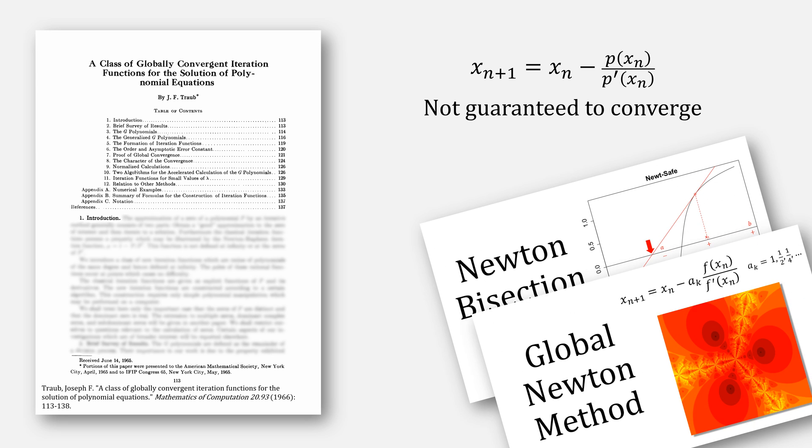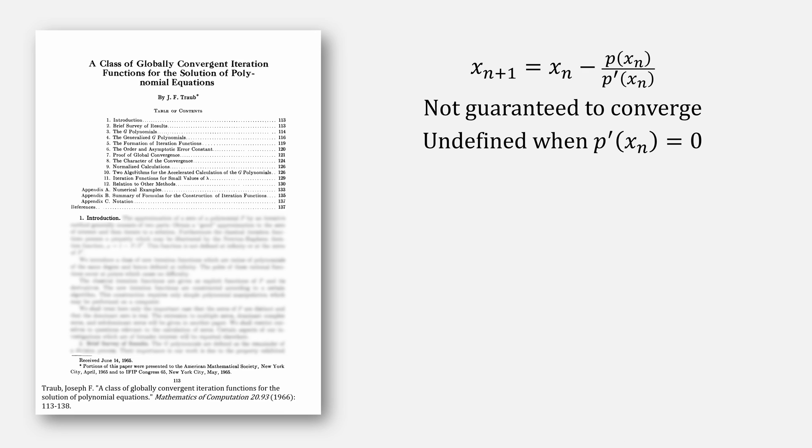In a class of globally convergent iteration functions for the solution of polynomial equations, Traub notes that for Newton's method, there is no actual guaranteed convergence. Now, quick sidebar, if you use the Newton bisection hybrid or the global Newton method, those would converge, but those are in other videos. He also notes that the polynomial would be undefined when the value of the derivative is zero.